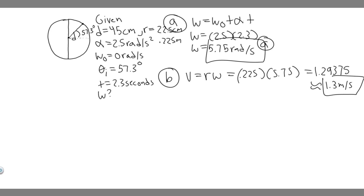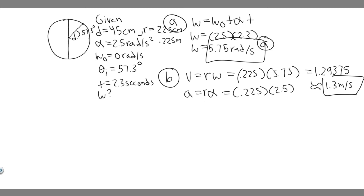Now for the tangential acceleration. The formula is tangential acceleration equals r times alpha. So that's 0.225 meters times 2.5 radians per second squared, which gives 0.5625 meters per second squared. Those are the two answers for part B: linear speed of 1.3 meters per second and tangential acceleration of 0.5625 meters per second squared.